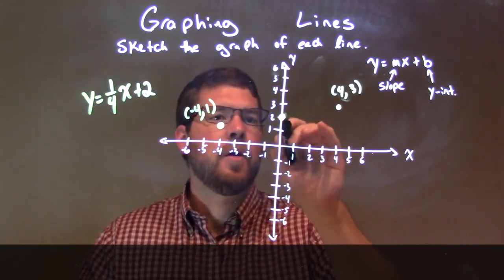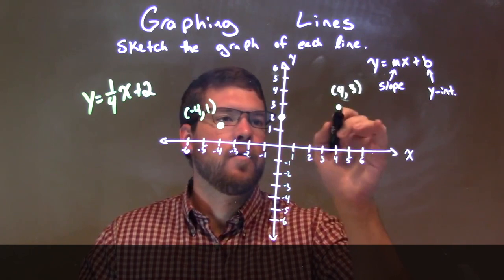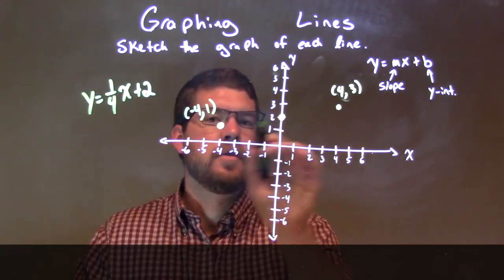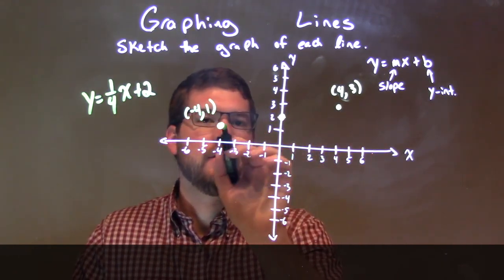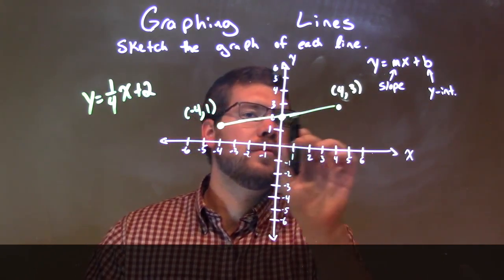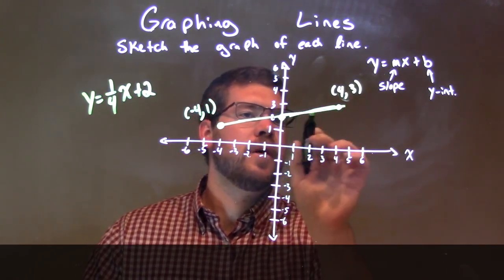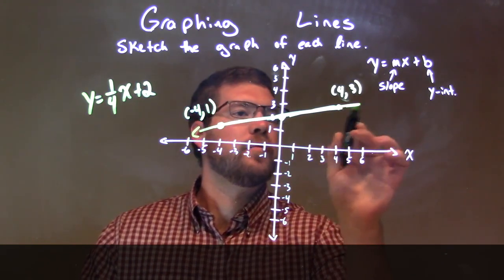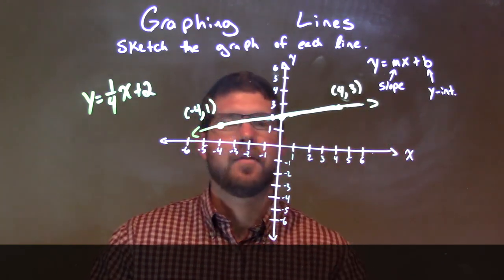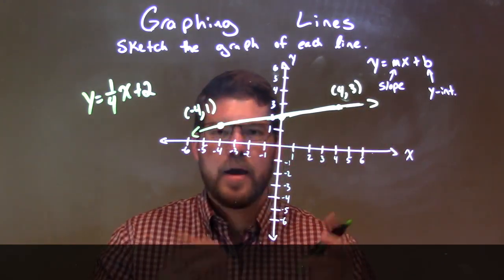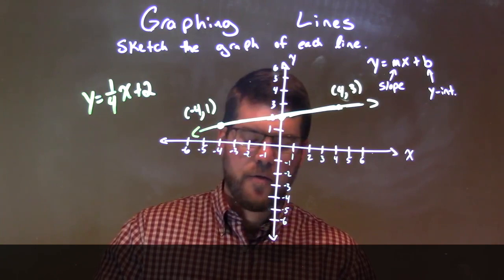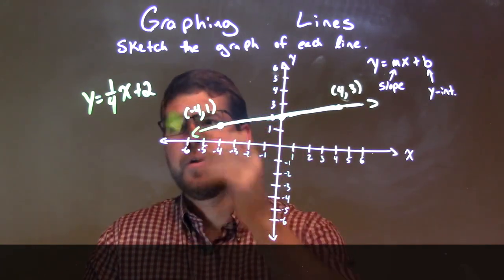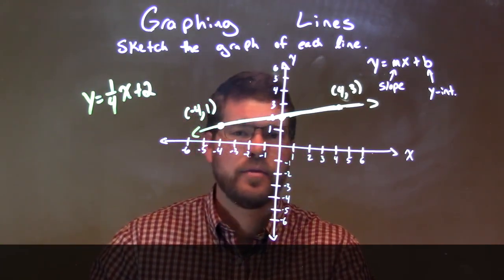So remember, up 1 unit over 4 is the same thing as down 1 unit to the left 4. We connect these lines here and we can make a nice straight line — freehand, not the best, but it's alright. And there we have it — we have our final answer, our graph for the line y equals 1 fourth x plus 2.